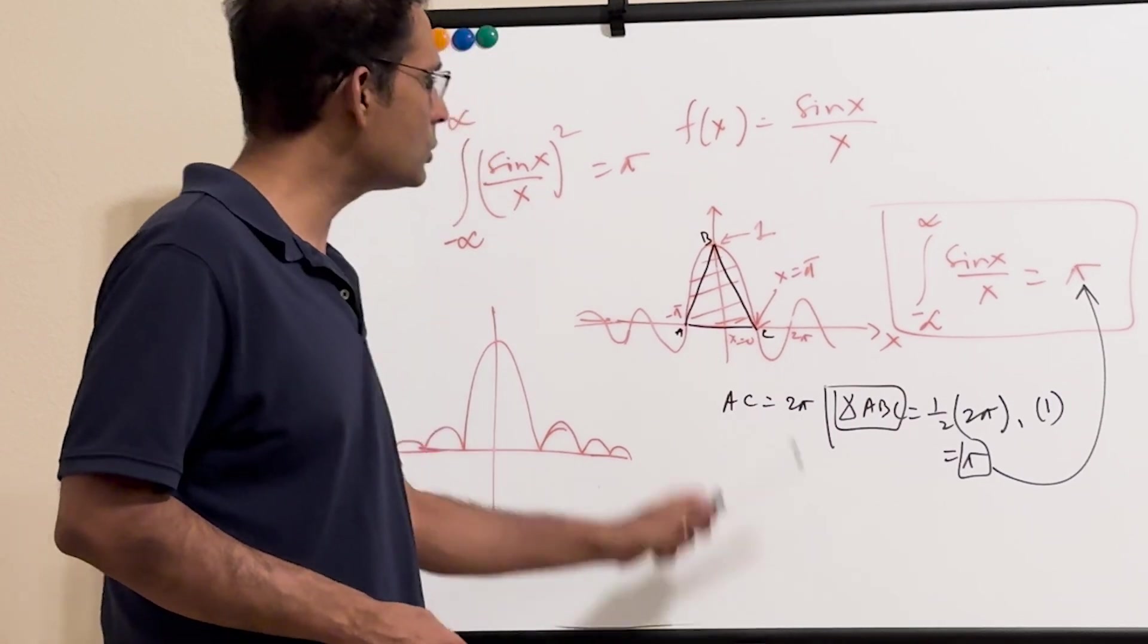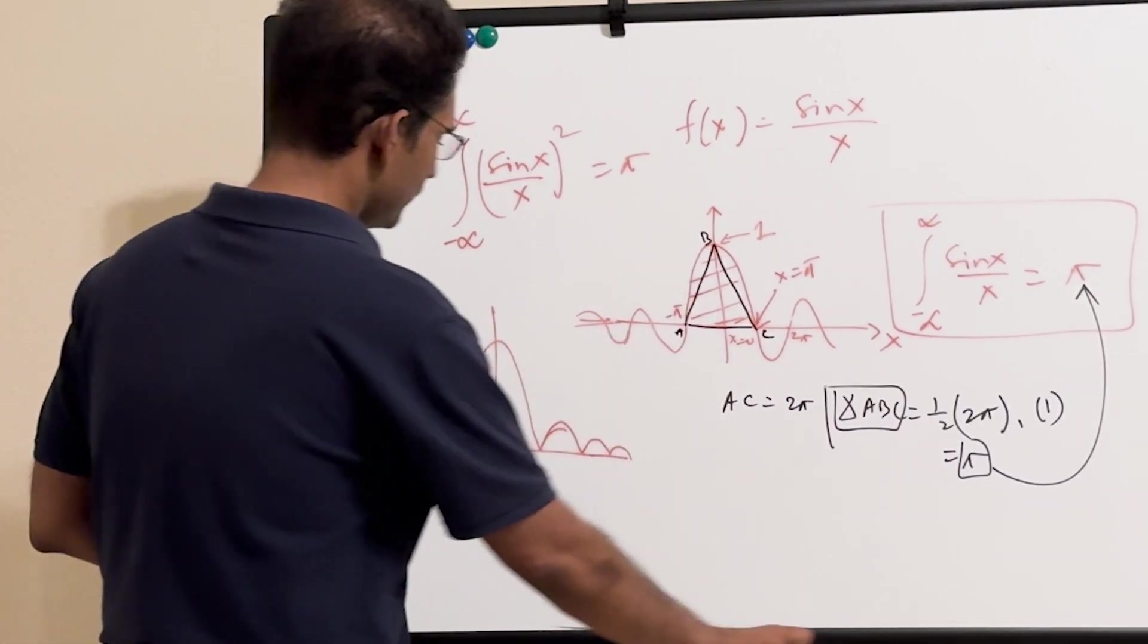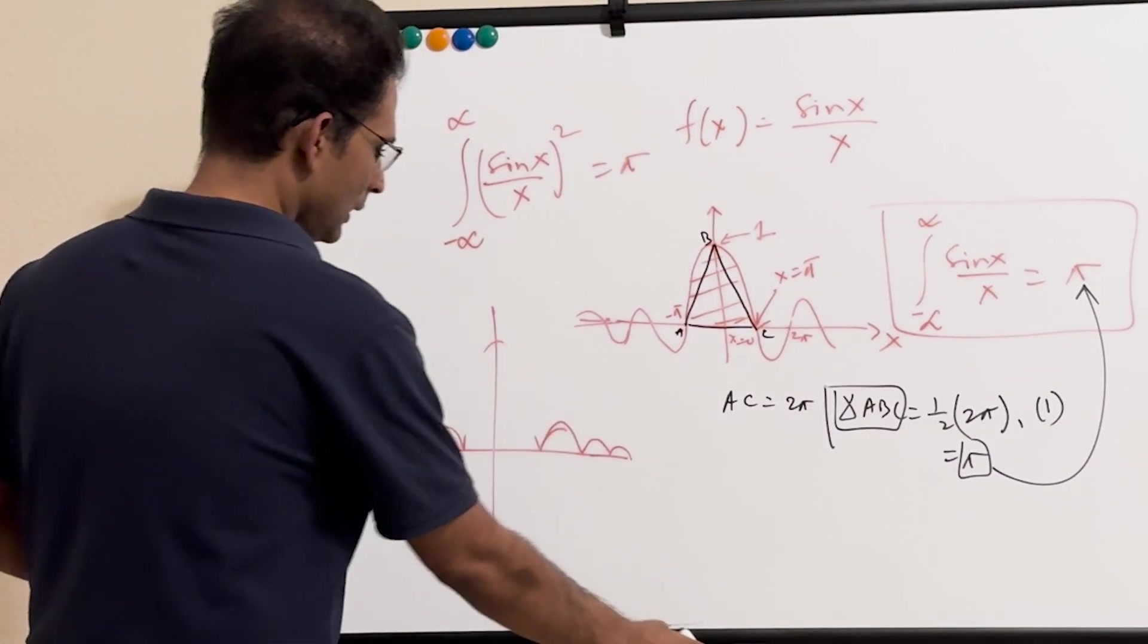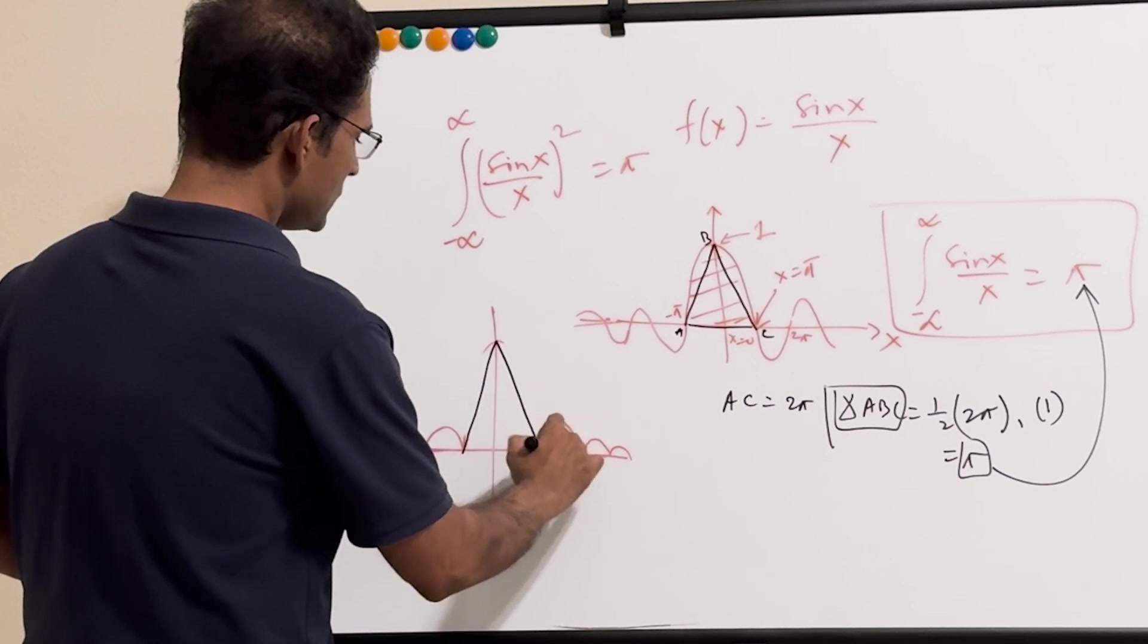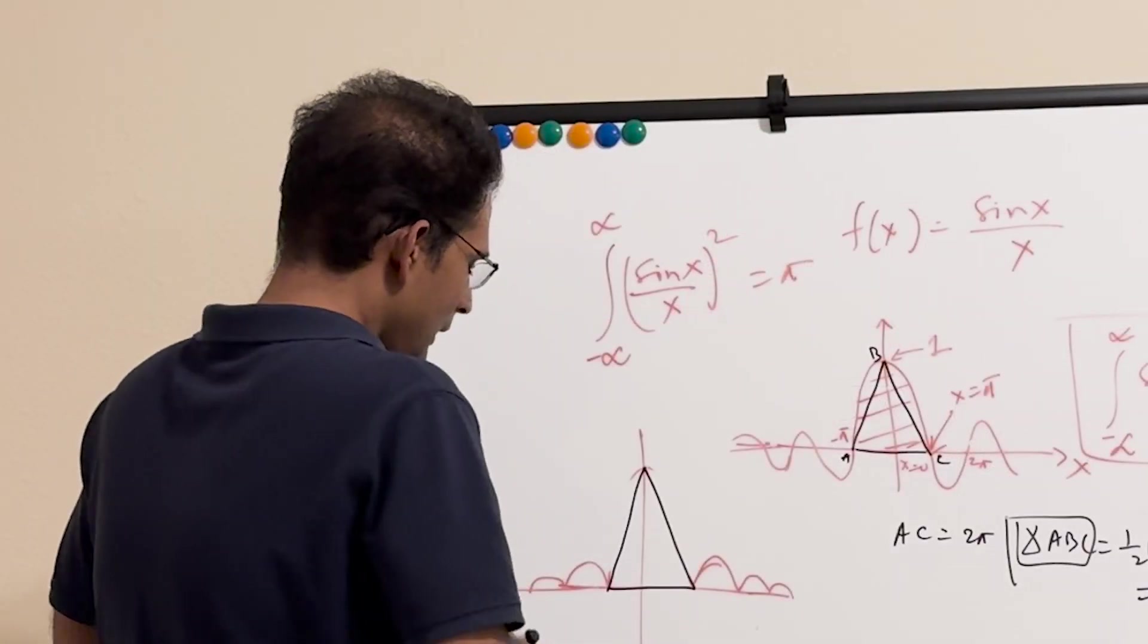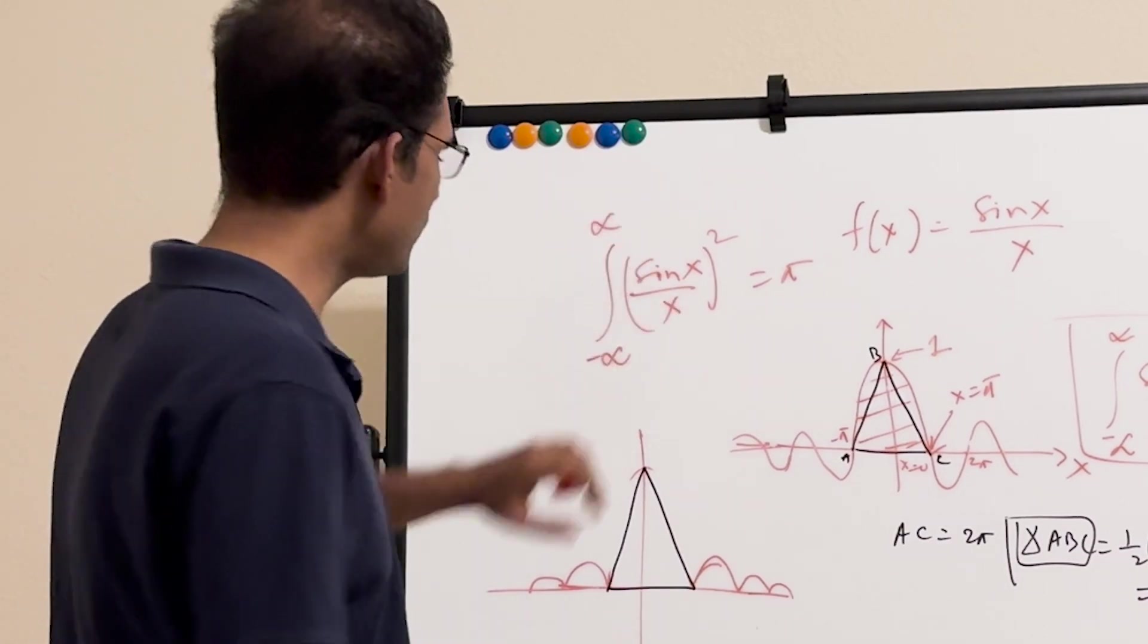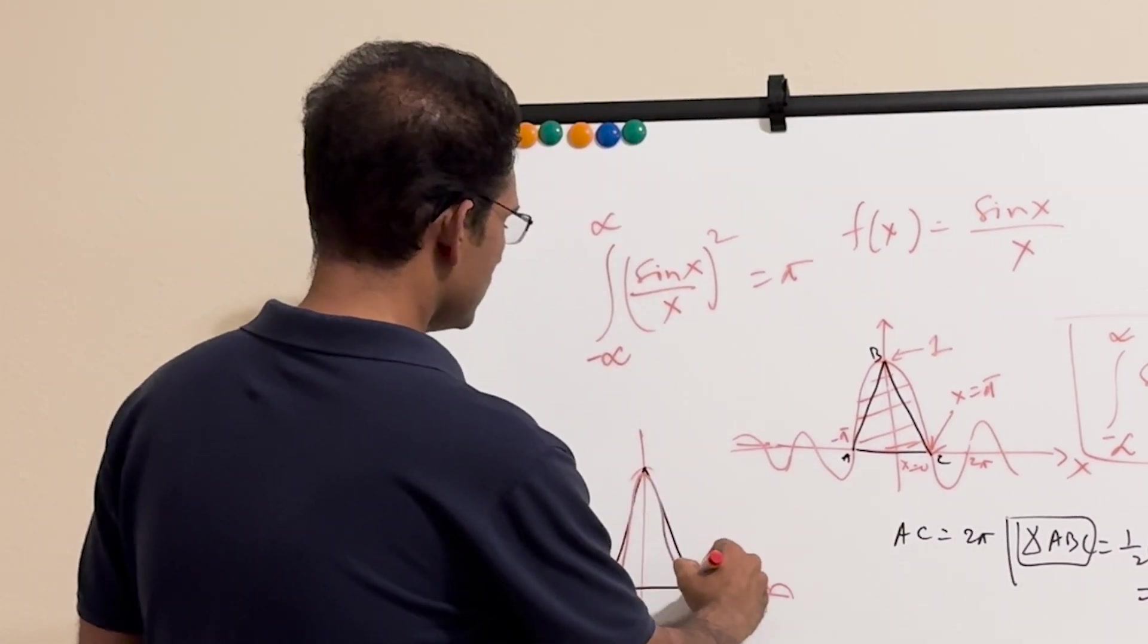And so that means you can draw a triangle once again. Now, I'll just modify this a little bit, I'll tell you why. So let me just draw the triangle first. So this is our triangle, right? And the thing is...